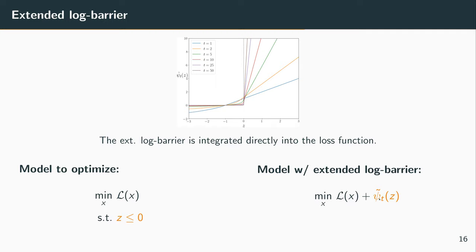So a log barrier and the extended log barrier will act as a function that we add into the loss function that we minimize. It has a parameter t, which is the slope of the barrier. So when z is over its bound, so when z is positive, there is a cost to pay.